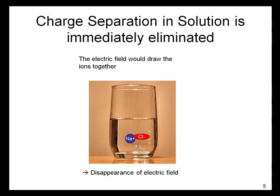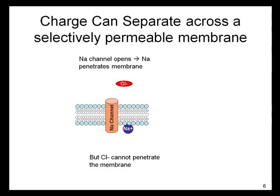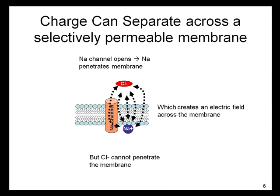The reason there is no electric field is that any electric field is immediately eliminated. However, across a selective membrane, such as the plasma membrane, charge can separate. For example, when a sodium channel opens, it results in sodium ions crossing the membrane, which creates an electric field. But chloride cannot penetrate the membrane. Now there is an electric field across the membrane because there is a positive charge that is not accompanied by a negative charge right next to it.